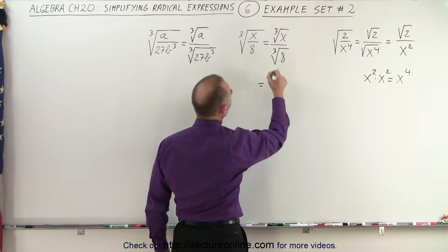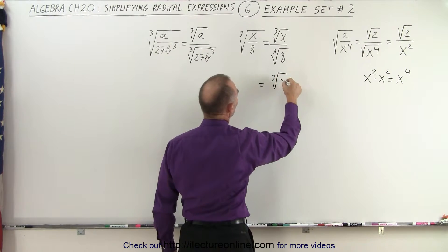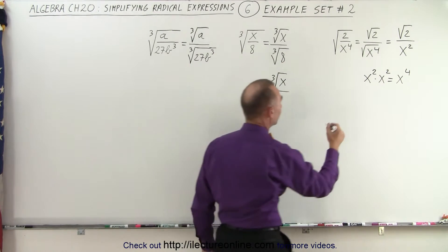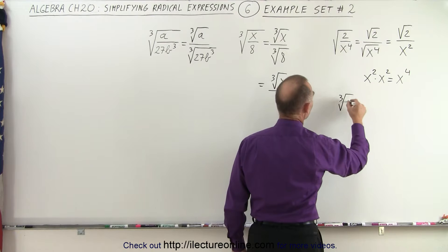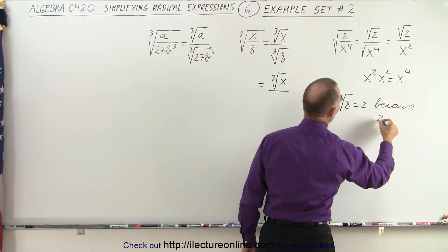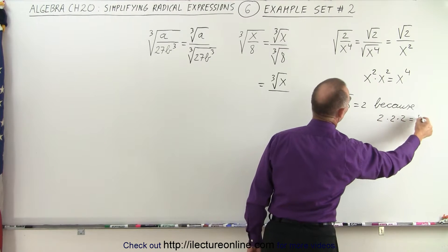Over here, this can be written as the cube root of x, because nothing changes, but in the denominator, 8 is 2 times 2 times 2. So you can see that the cube root of 8 equals 2, because 2 times 2 times 2 equals 8.